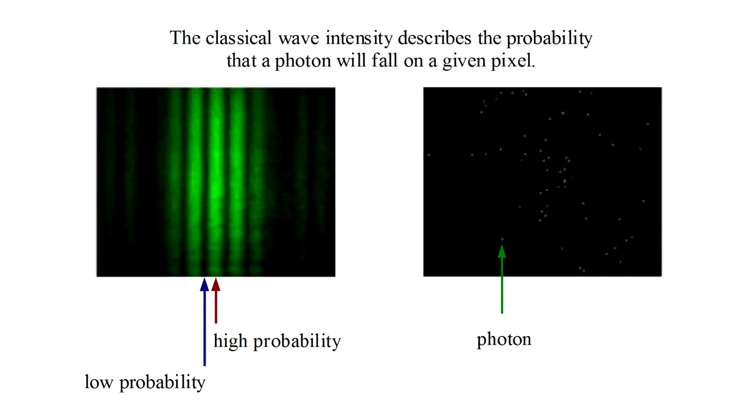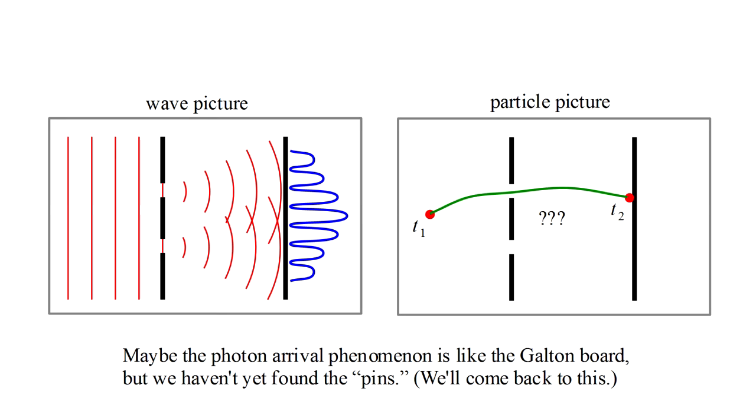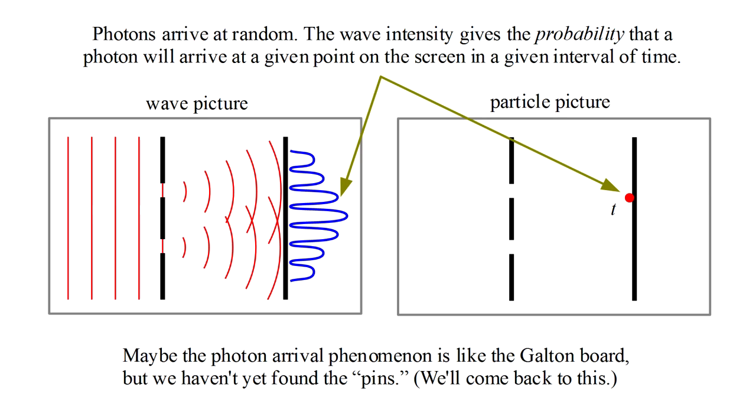The behavior of photons is suggestive of balls falling through the Galton board. Each photon ends up at a particular place on the output screen, but we can only talk about probabilities in advance of the actual events. Now maybe God doesn't play dice, and photons are particles that follow deterministic yet chaotic paths as in the Galton board. It's just that the, quote, pins are hidden from us. We'll come back to this question in a future video. For now we'll just note that for whatever ultimate reason, without a new theory, many of our physical predictions from quantum theory will necessarily have to be in terms of probabilities.